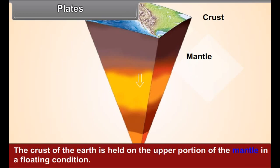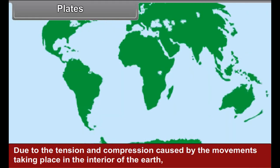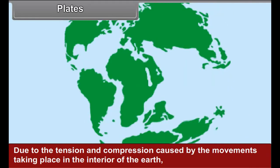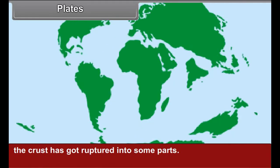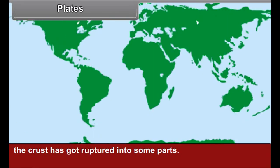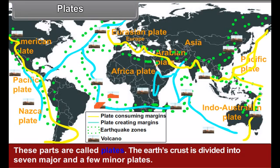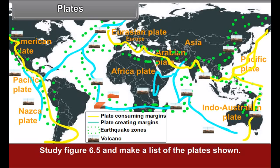Plates. The crust of the earth is held on the upper portion of the mantle in a floating condition. Due to the tension and compression caused by the movements taking place in the interior of the earth, the crust has got ruptured into some parts. These parts are called plates. The earth's crust is divided into seven major and a few minor plates. Study figure 6.5 and make a list of the plates shown.